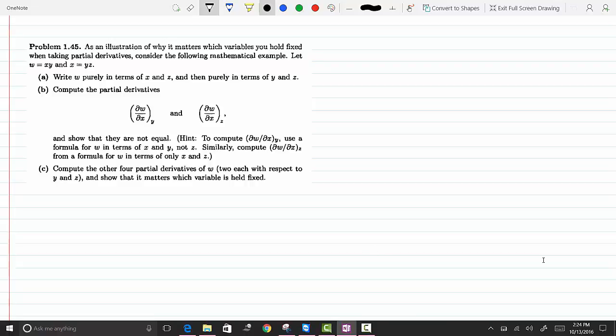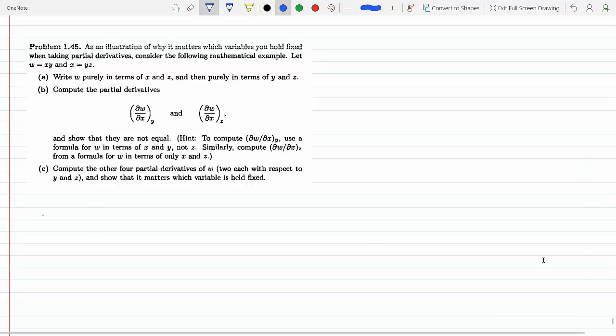That's straightforward - we can just eliminate the unknowns one after the other. For part A, X and Z: we know that Y equals X over Z, so we'll plug it into W. W will be X times X over Z, so this is X squared over Z.